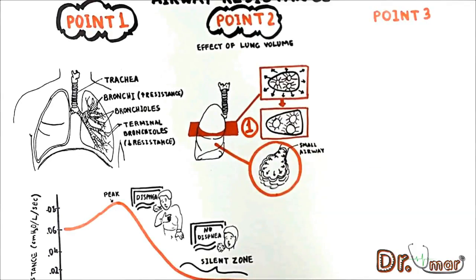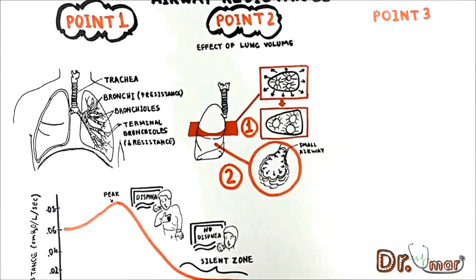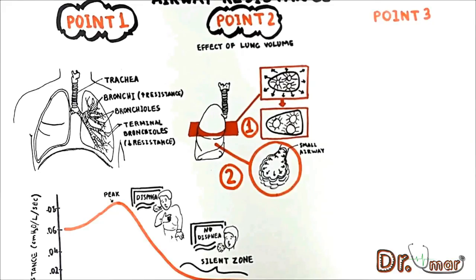The first mechanism of decreasing resistance is lung expansion which leads to opening the airways. The second mechanism has to do with the physical connection of the alveoli with small airways. When alveoli expand, this pulls open small airways with it, thus resistance decreases.